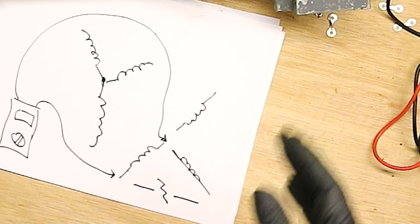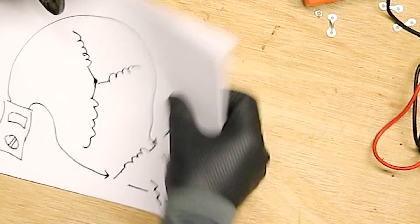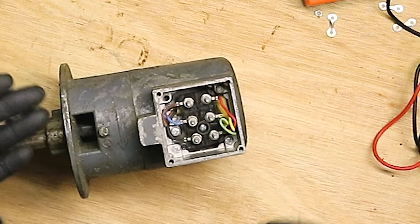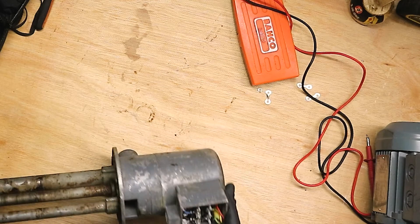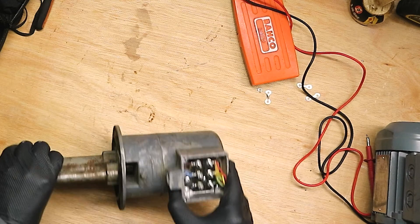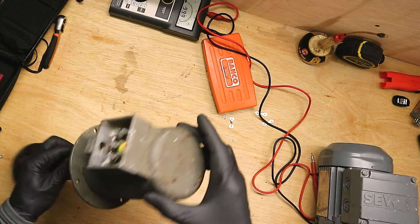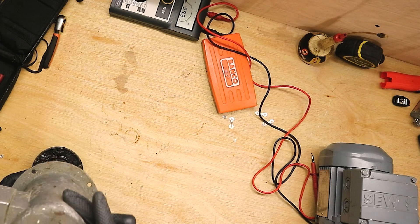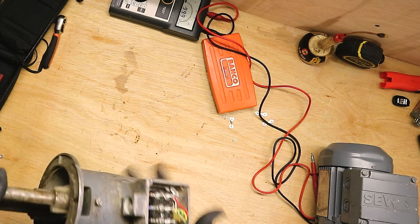So something's happened to this motor, and we have lost the continuity. Something's severed the windings internally. It could have been overheated. It could have been mechanical damage where it's moved and severed it. I would like to be able to remove the casing from this motor, and show you inside. But, I can't see an easy way of doing that.